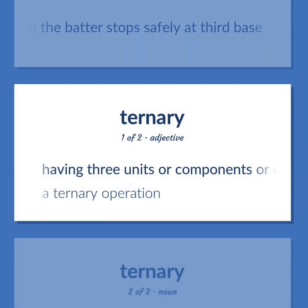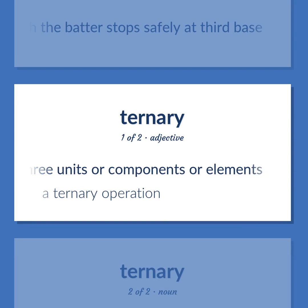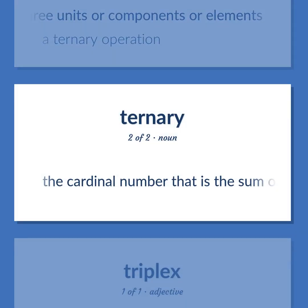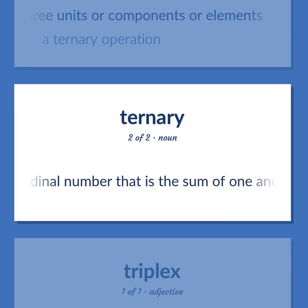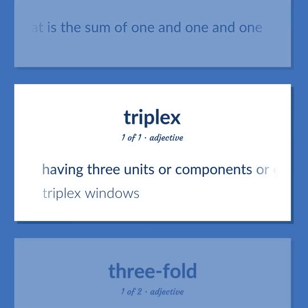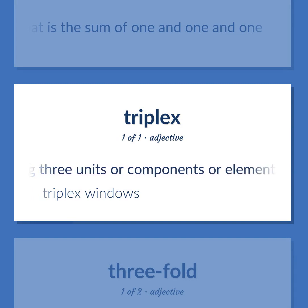Ternary: Having three units or components or elements. Example: A ternary operation. The cardinal number that is the sum of one and one and one. Triplex: Having three units or components or elements. Example: Triplex windows.